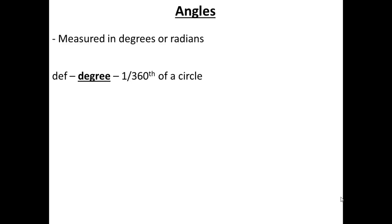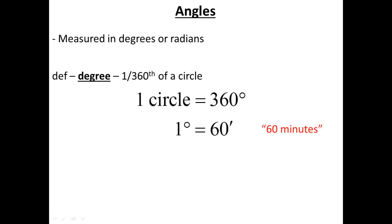Degrees can be broken down into smaller sizes as well. Whereas 1 circle equals 360 degrees, 1 degree can actually be broken into 60 minutes, and 1 minute is equal to 60 seconds. We use a superscript circle for a degree, a tick mark for a minute, and a double tick mark for a second. In general we call this degrees-minutes-seconds, abbreviated DMS. So 1 degree equals 60 minutes, and 1 minute equals 60 seconds.